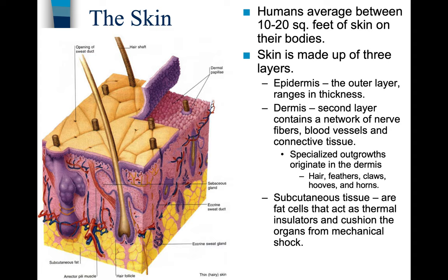The second layer of skin is known as the dermis. It contains a network of nerve fibers, blood vessels, and connective tissue. Specialized outgrowths originate in the dermis — in humans, that would be hair. In other creatures, it would be things like feathers, claws, hooves, and horns. All of it comes from the dermis.